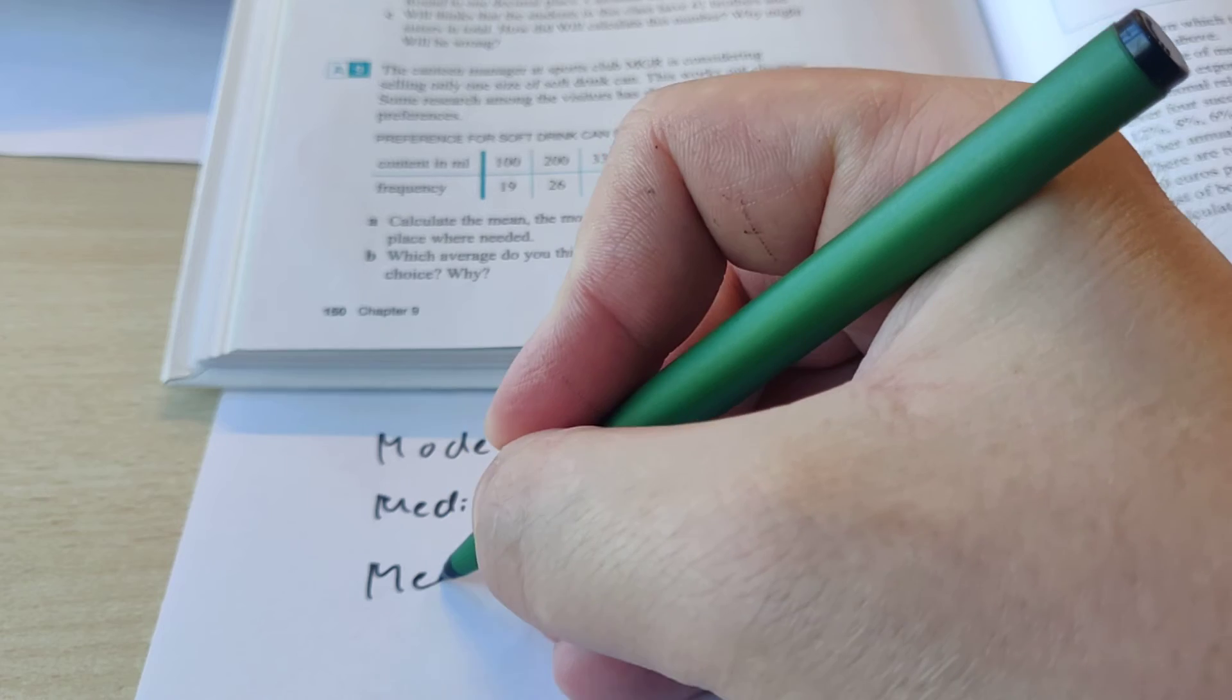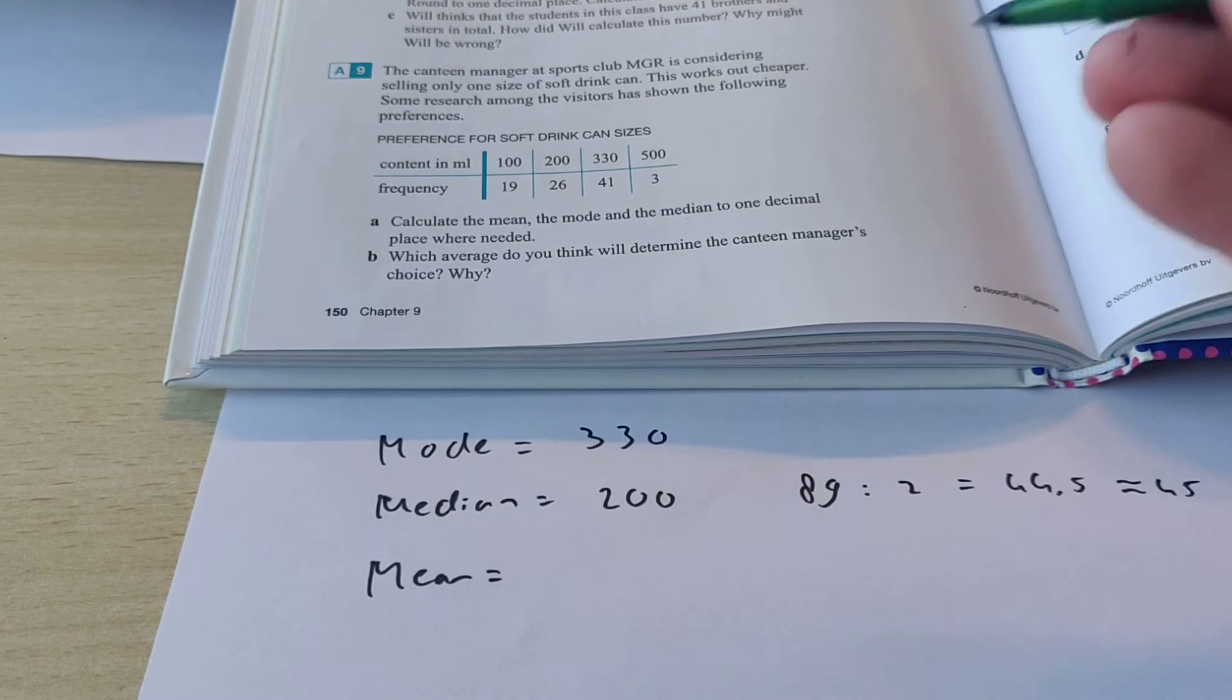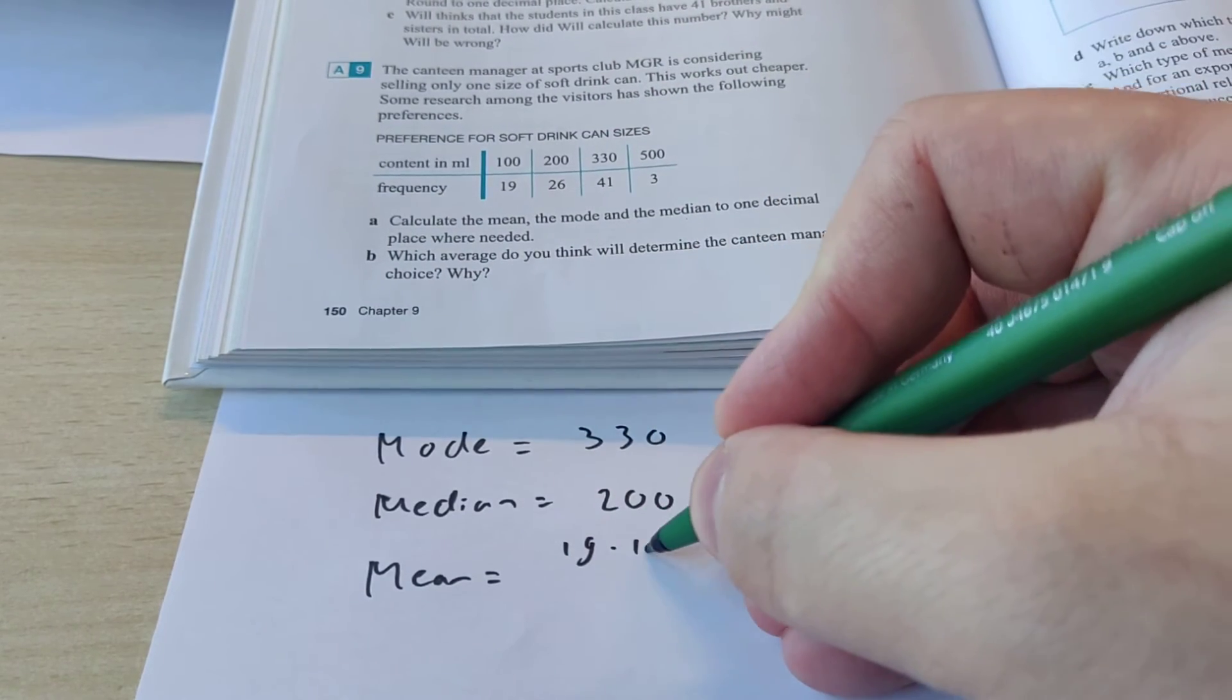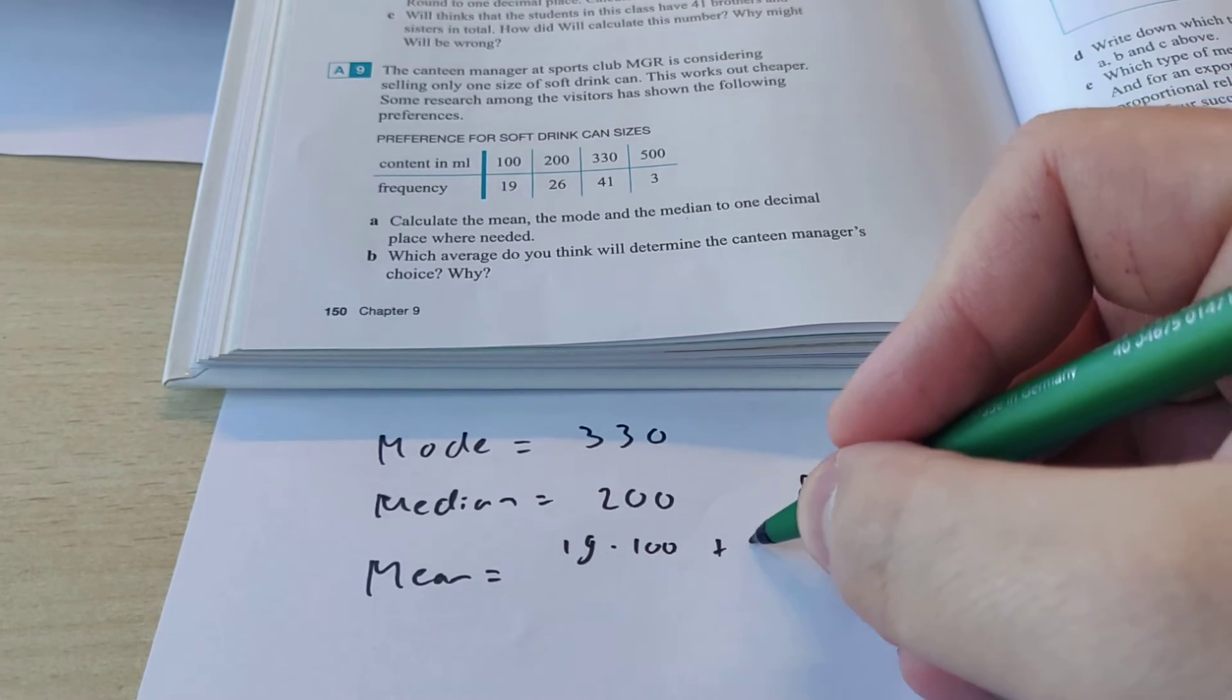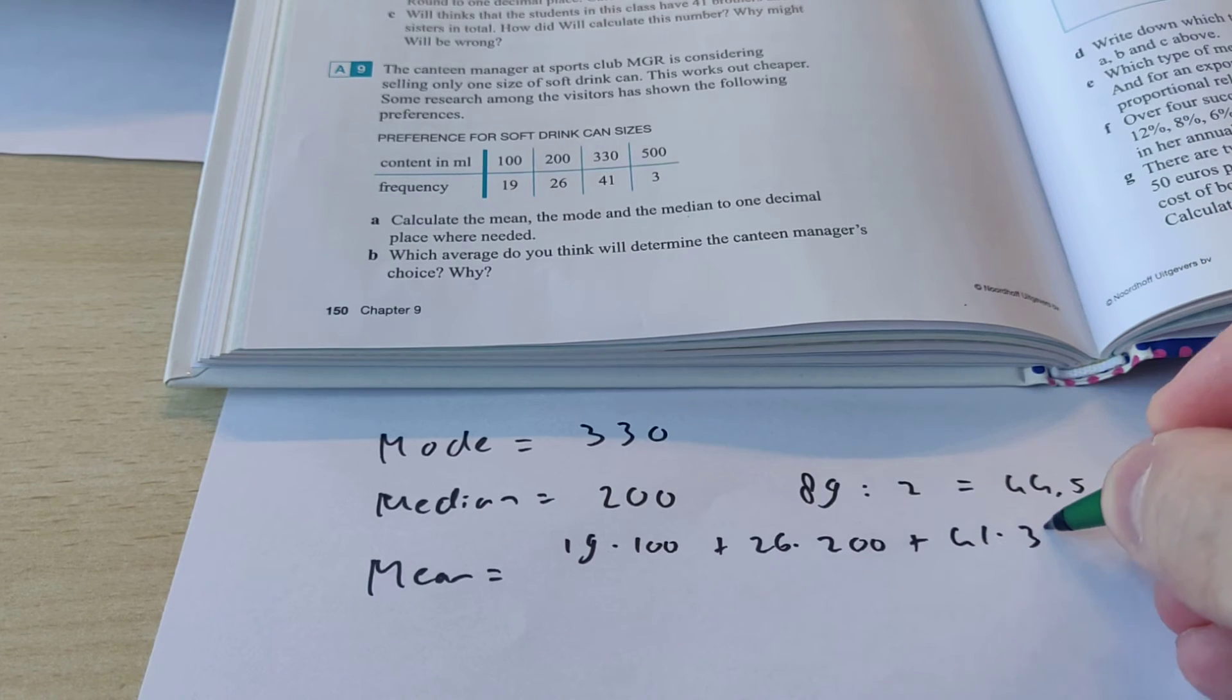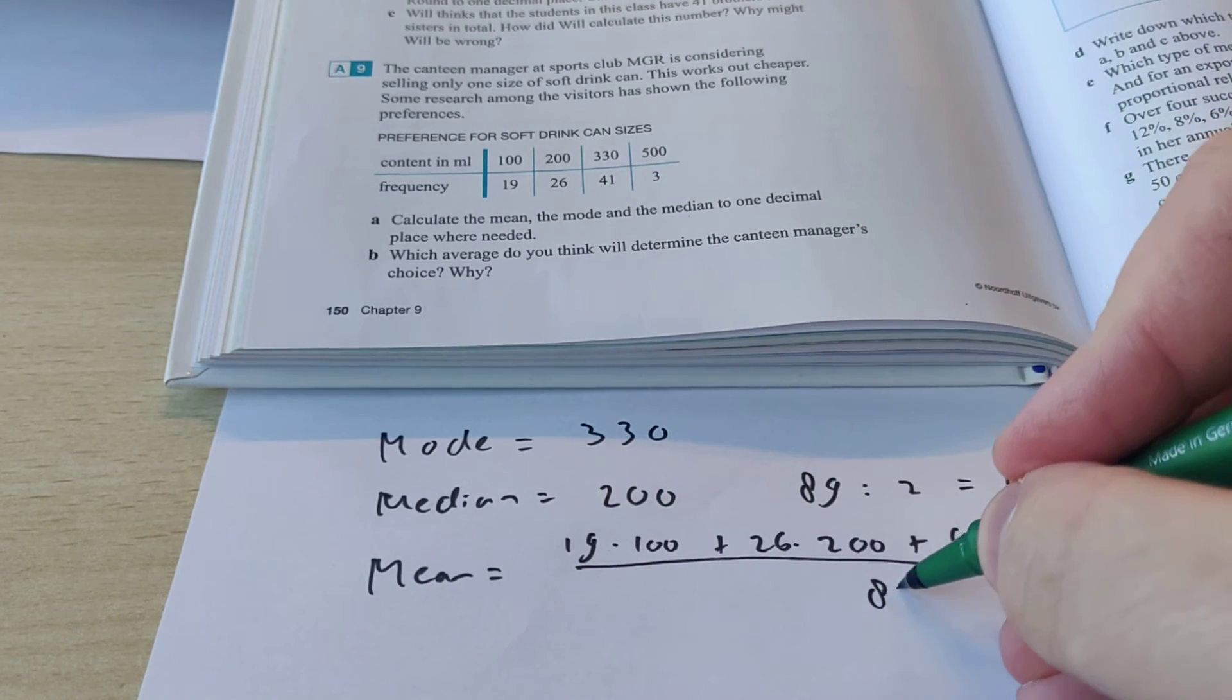And then the mean. The mean is the average. So, first you want to calculate. Well, we already know the total frequency. That's 89. So, now you want to do 19 times 100, because 19 people want 100 milliliters in a can. Plus 26 times 200, because 26 people want to have that. Plus 41 times 330. Plus 3 times 500. And then we divide that by 89.